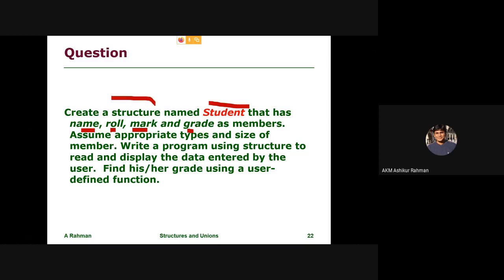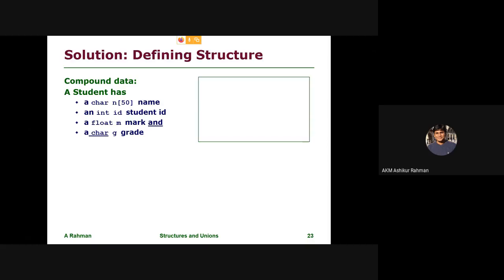First of all, we will define the structure as a student with name, role, and grade. The name is a string — the inner digit is very high. Mark is a float. Grade is a character.